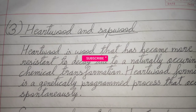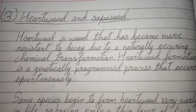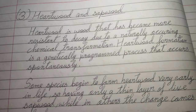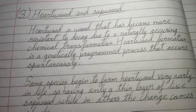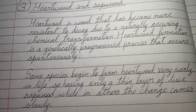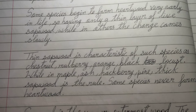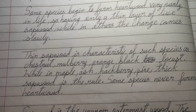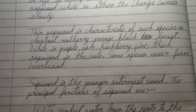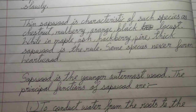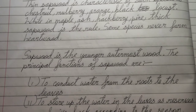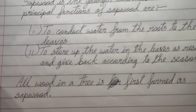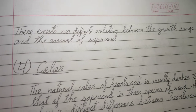Heartwood is wood that has become more resistant to decay due to a naturally occurring chemical transformation. Heartwood formation is a genetically programmed process that occurs spontaneously. Some species begin to form heartwood very early in life, having only a thin layer of sapwood, while in others the change comes slowly. Thin sapwood is characteristic of species such as chestnut, mulberry, orange, and black locust, while in maple, ash, hackberry, and pine, thick sapwood is the norm. Sapwood is the younger, outermost wood. Its principal functions are to conduct water from the roots to the leaves, to store water and resources, and release them according to the season. All wood in a tree is first formed as sapwood.